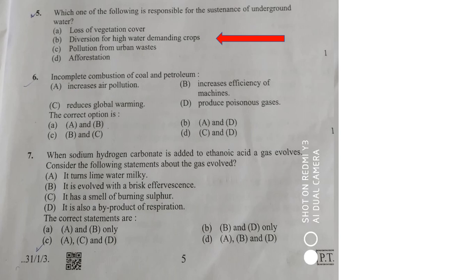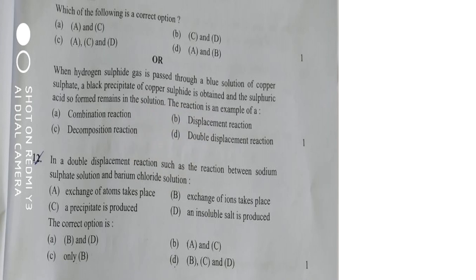I have explained this very well in my videos. In question 6, you have to choose the correct options — the answer choices are A, B, C, and so on. The topic is incomplete combustion of coal and petroleum. I will provide the answers very quickly. Moving on, you have got choices in which you have to identify reactions: which is a combination reaction, displacement reaction, decomposition reaction, or double displacement reaction.